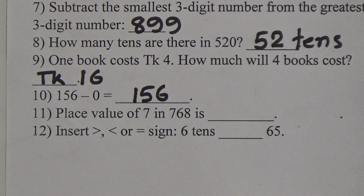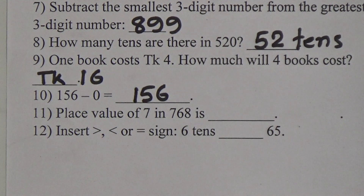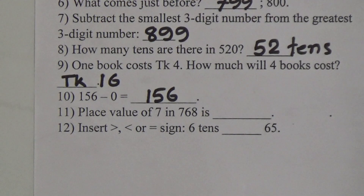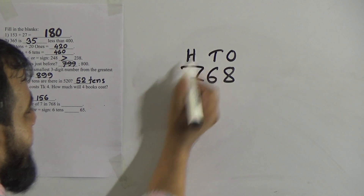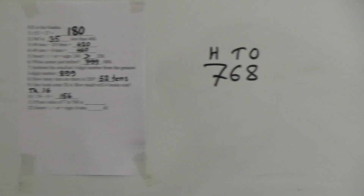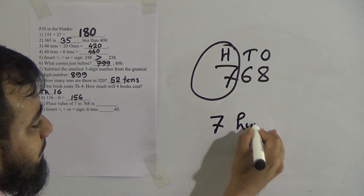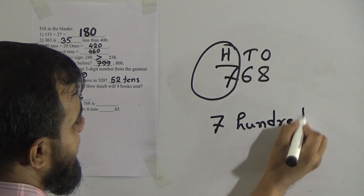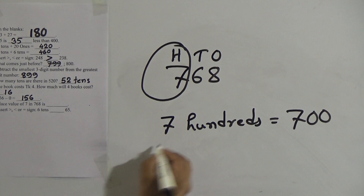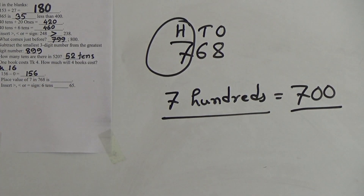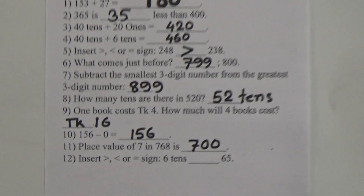Question number 11: place value of 7 in 768. In 768, 8 is in the ones place, 6 is in the tens place, and 7 is in the hundreds place. So the place value of 7 is 700. You can write '700s' or simply 700.